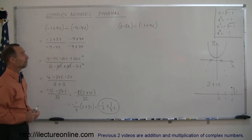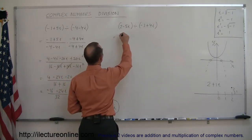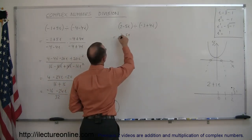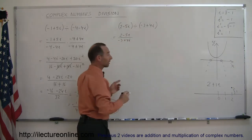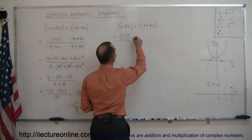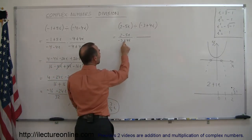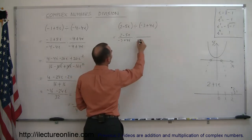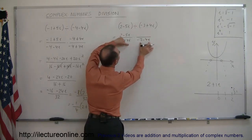Let's do a second one to reinforce the technique. Again, the first thing you do is write it as a fraction: 2 minus 5i divided by minus 3 plus 4i. The next step is to multiply both the numerator and the denominator by the conjugate of the denominator. The conjugate is the same denominator but with the sign of the imaginary part changed, so this is minus 3 minus 4i. When we multiply these two together, we know the imaginary parts are going to drop out.